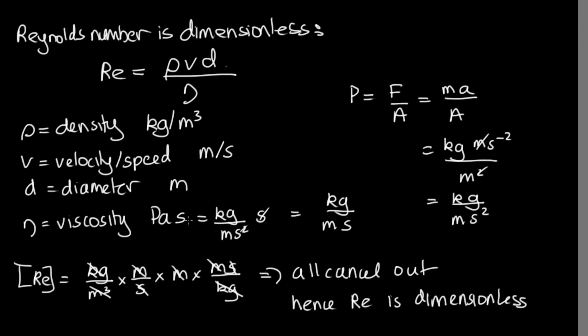Hence, the Reynolds number is dimensionless. In proving this, we've assumed that the units for viscosity is pascal seconds. Or alternatively, we can write it as kilograms divided by meter·seconds. Let's solve a problem now.